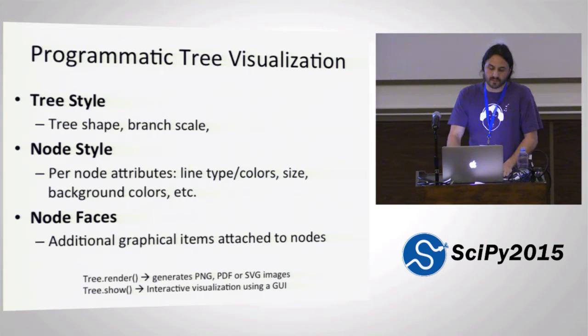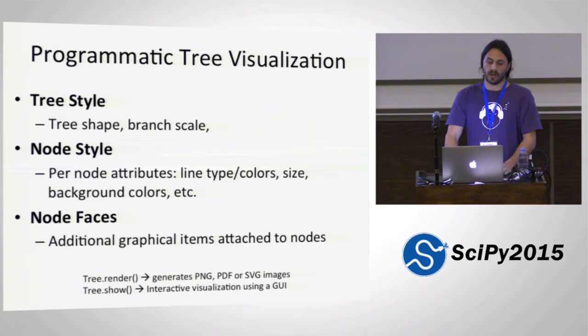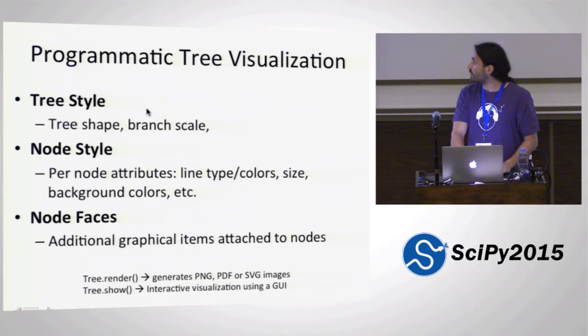I think the most interesting part of ETE is the programmatic tree visualization. This is a specific module that gives you a lot of possibilities to render trees in a very personalized manner. This is currently not possible with standalone tools, or rather it is possible but requires a lot of manual interaction. There is no API to create graphically rich trees — and that's what I'm trying to do with this module. Basically, there are three main layers of control in the API when you are generating tree images.